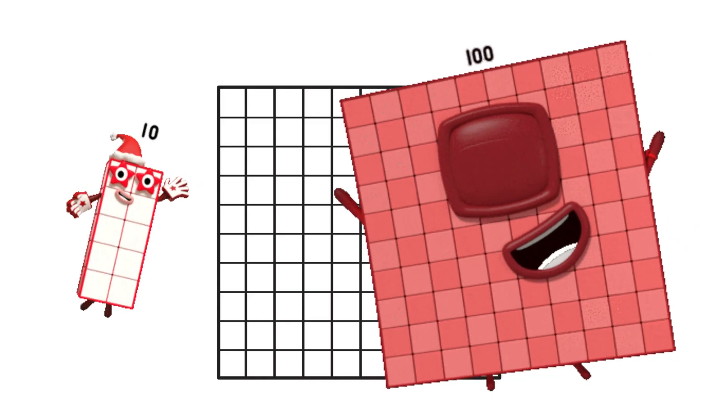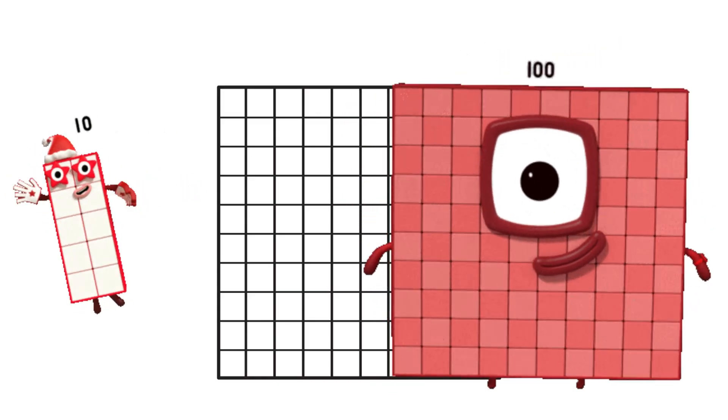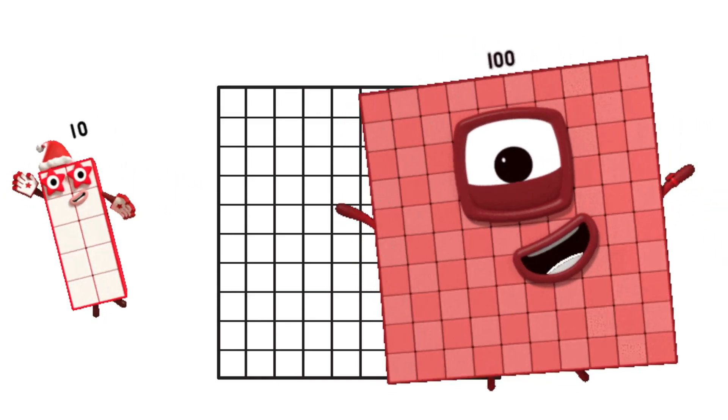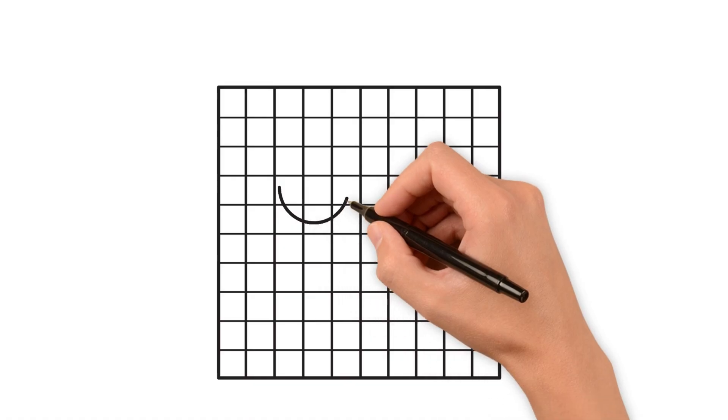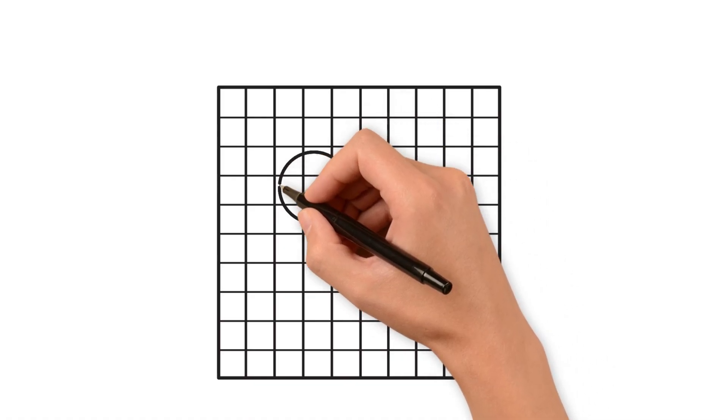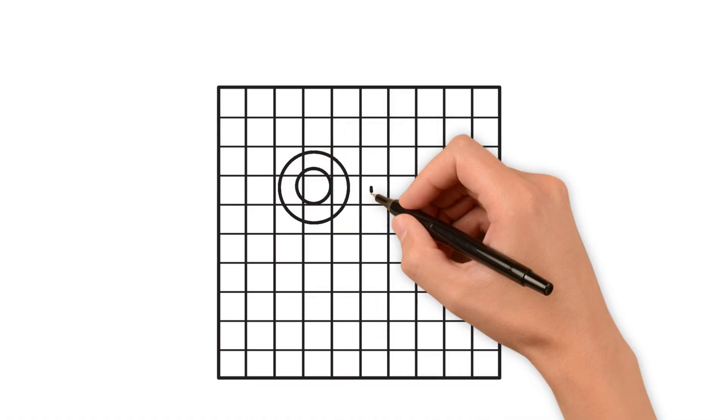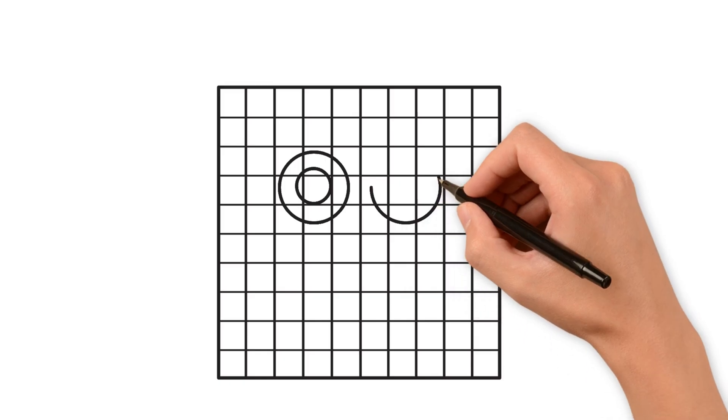10 times 10 equals 100. Can you clap 10 times to celebrate? Now, you have a 10 by 10 grid. That's 100 little squares. Draw two big round goggles for his eyes.